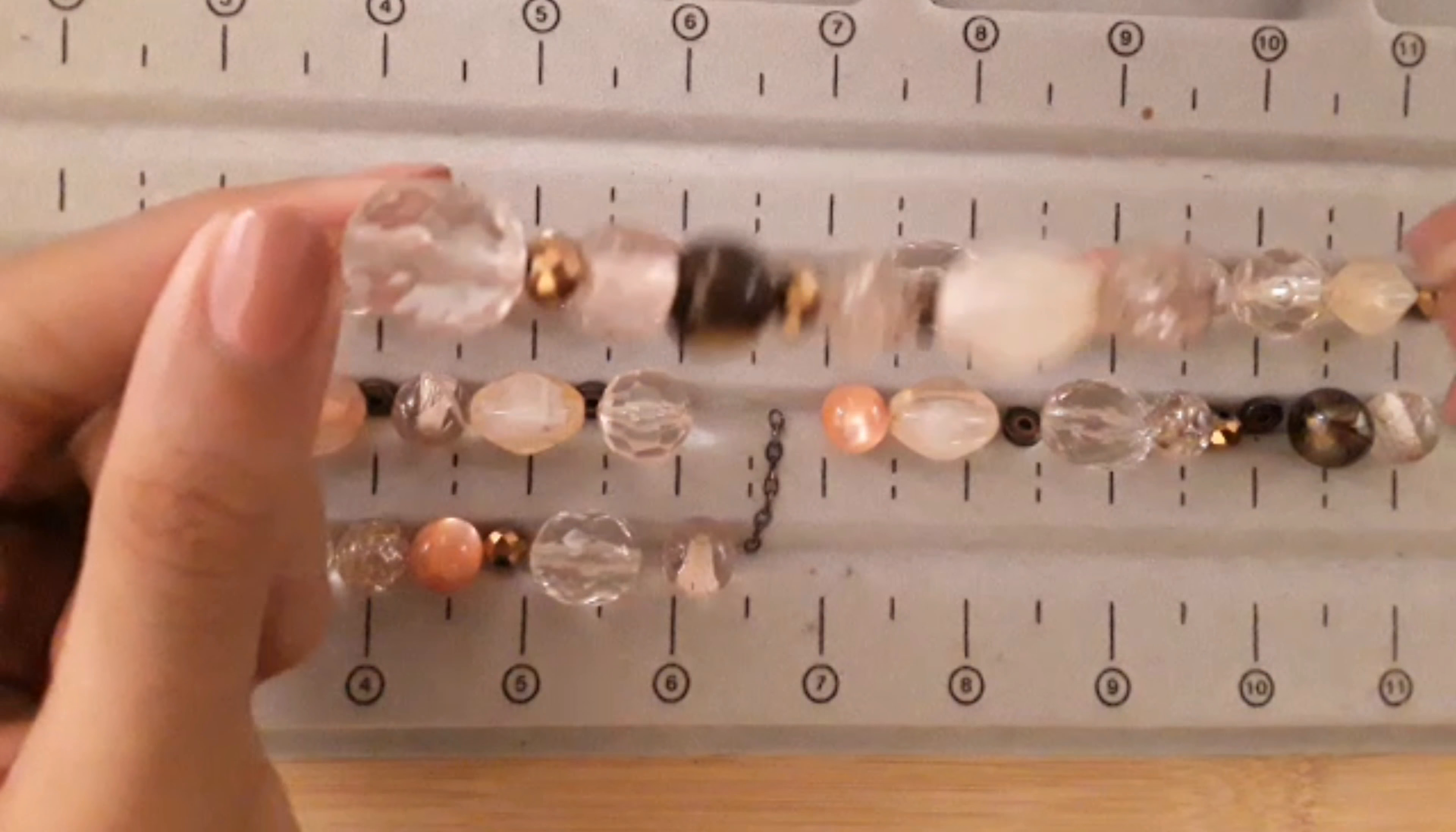So now what you're going to do is just continue adding your beads to the second link. So now we're up to our second chain link and we're going to do the same. So for me, I'm going to skip one and put it to the second one. Now you're going to do it with your third row.